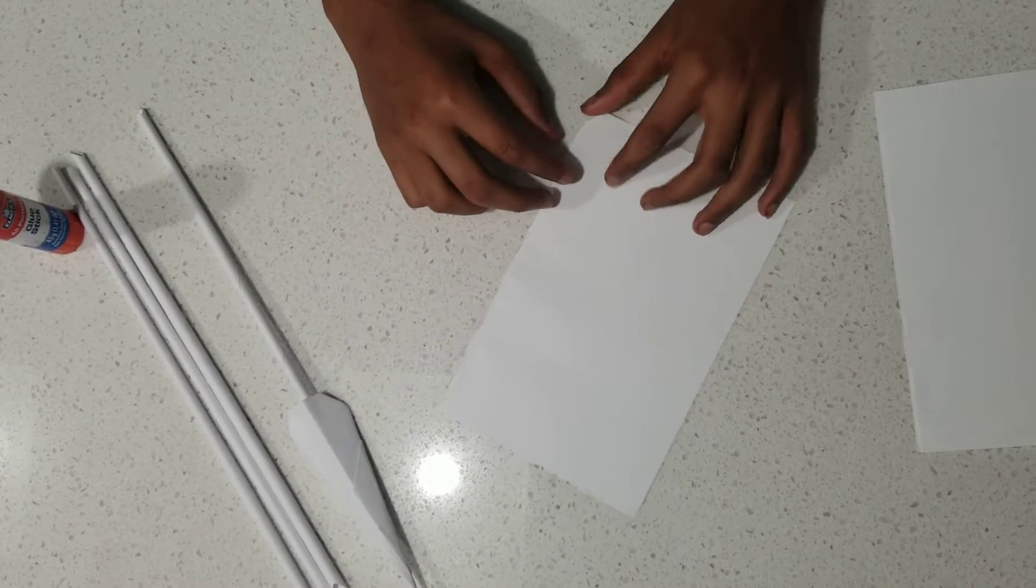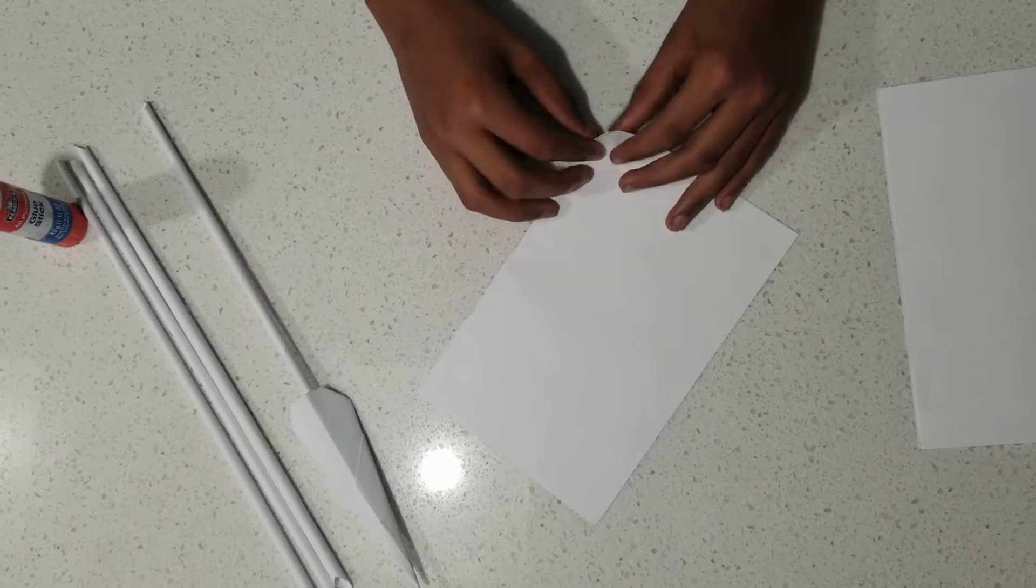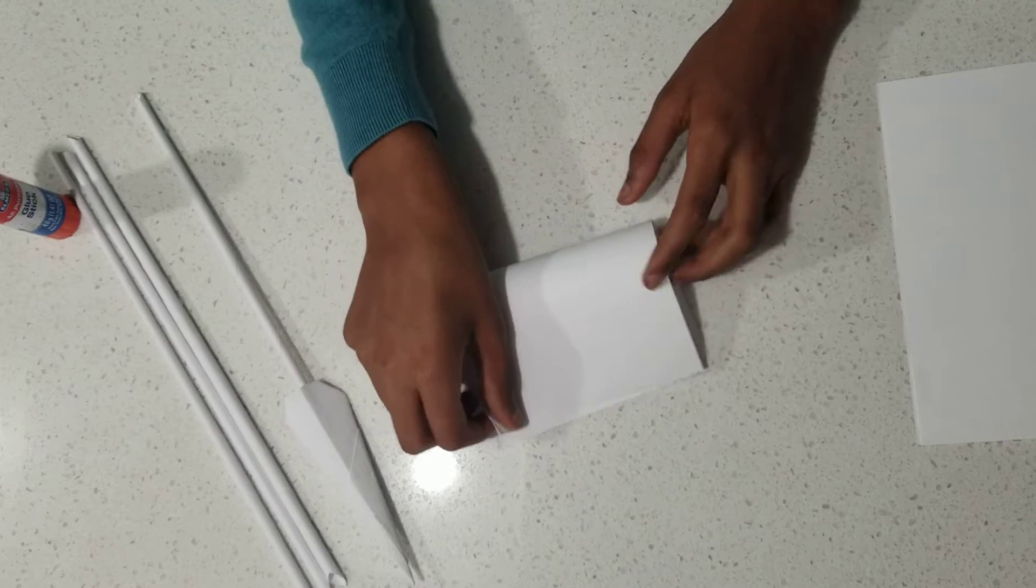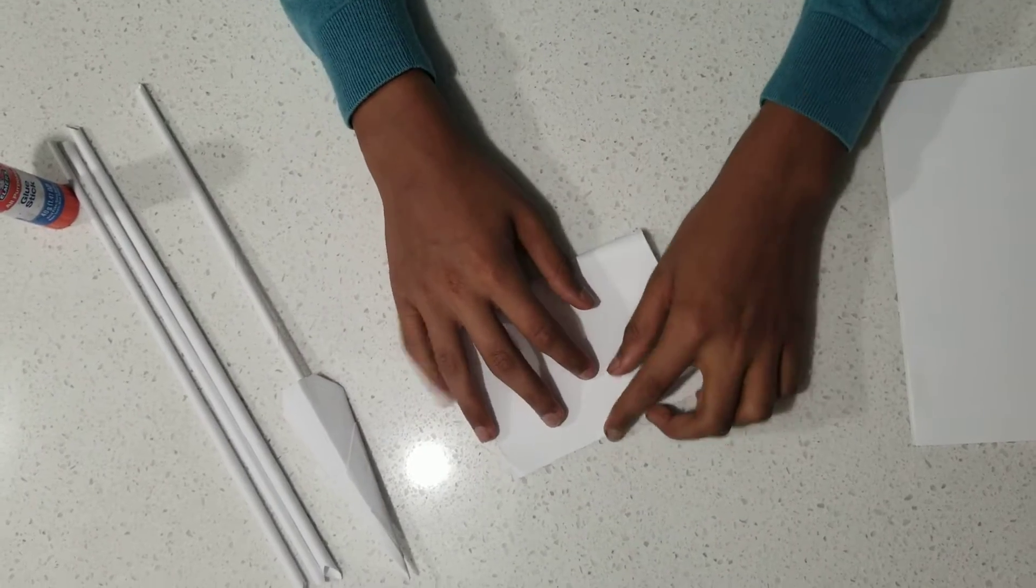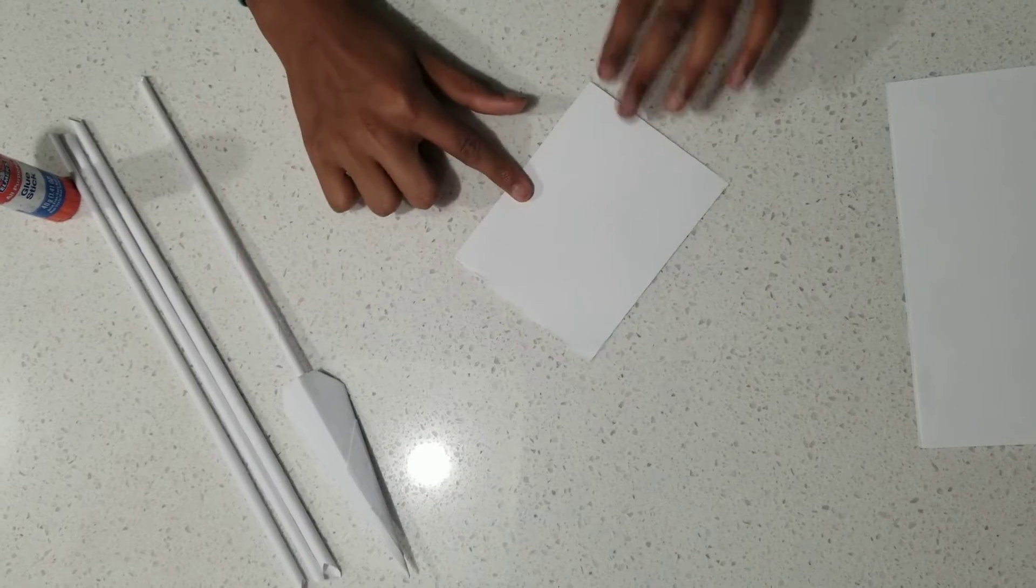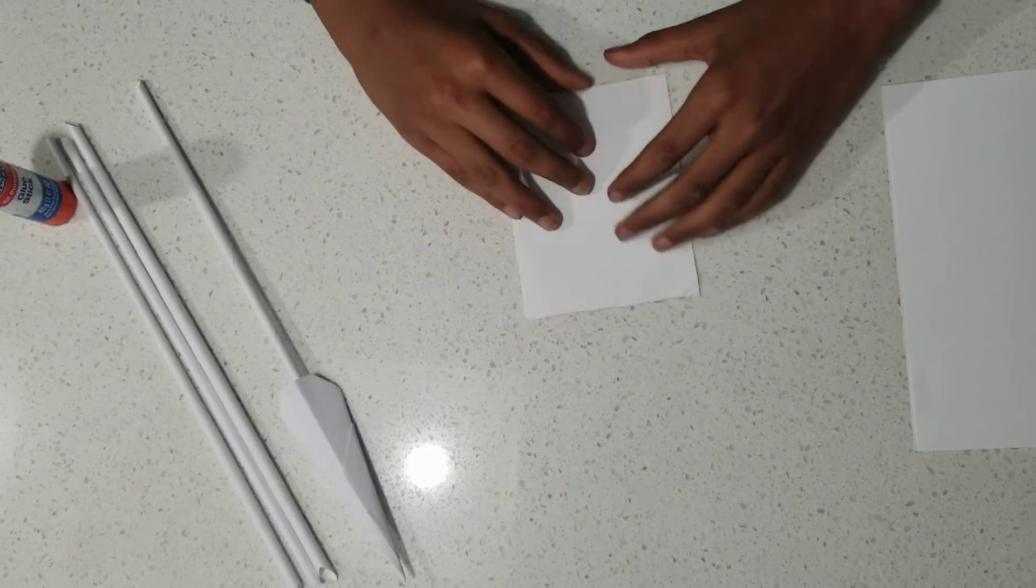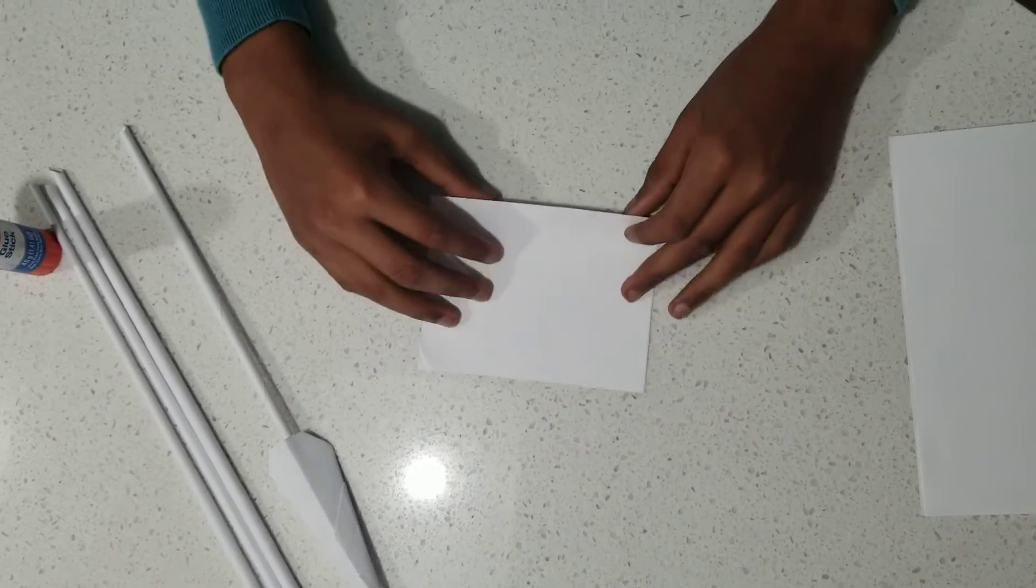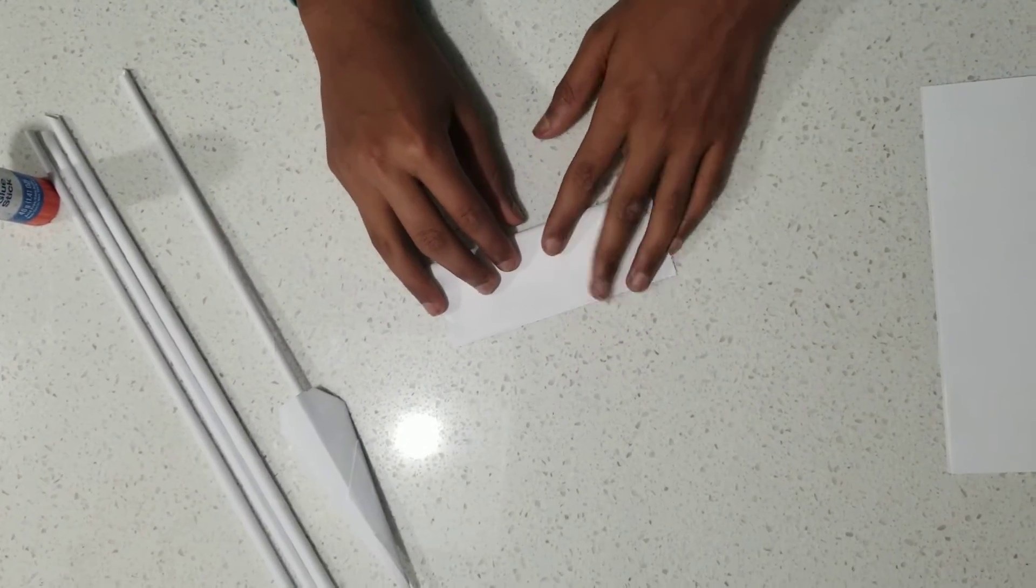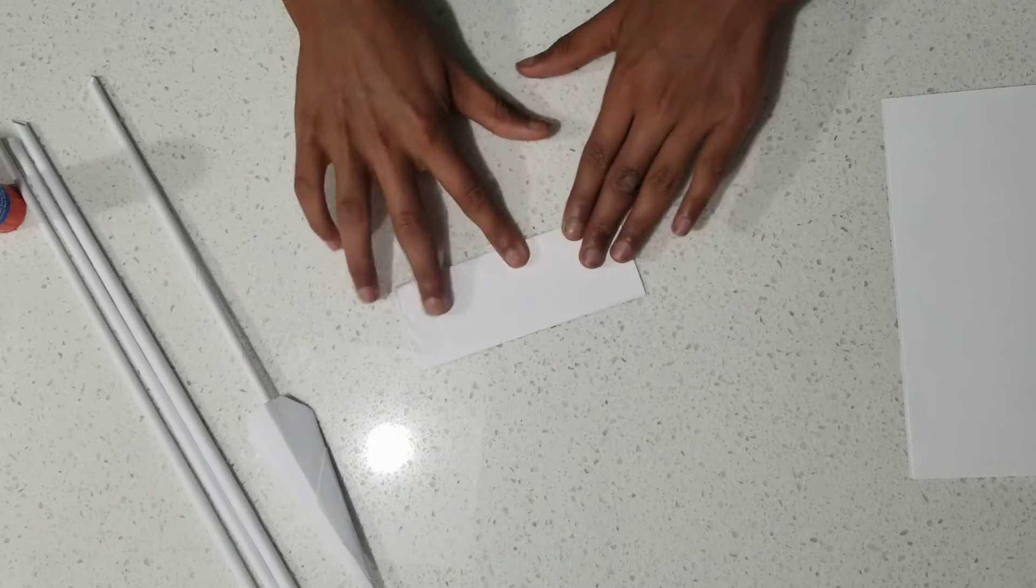To begin, we are going to fold it in half this direction and crease it. Then, I'm going to fold it upwards from here to here. And you crease that as well.